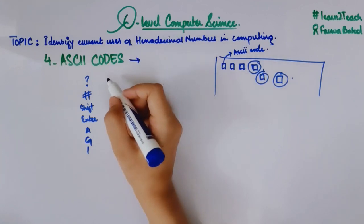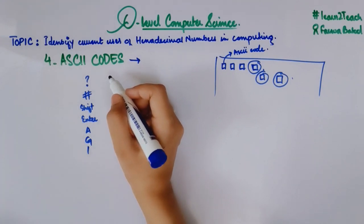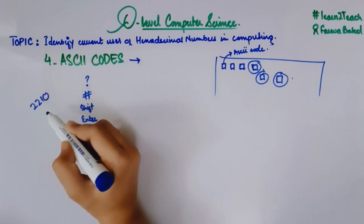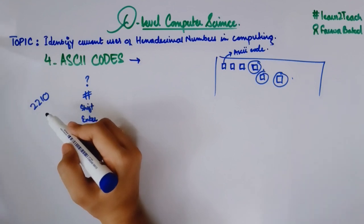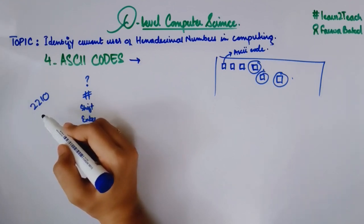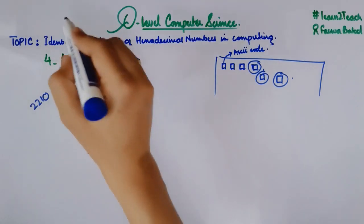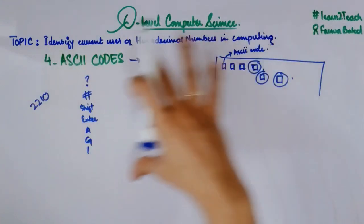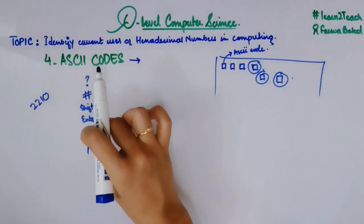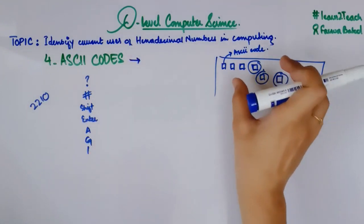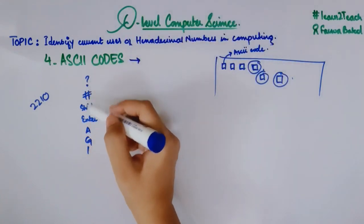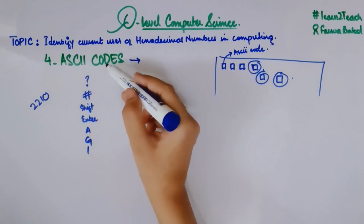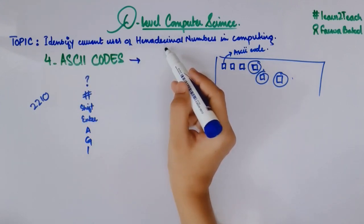There is a complete table you can see in your book — it is given in your Cambridge IGCSE Computer Science book written by David Watson and Helen Williams. You can find a complete table of ASCII codes with respect to each character. I have chosen some characters just to explain that for these characters we have ASCII codes, and these ASCII codes can be represented in terms of hexadecimal numbers.